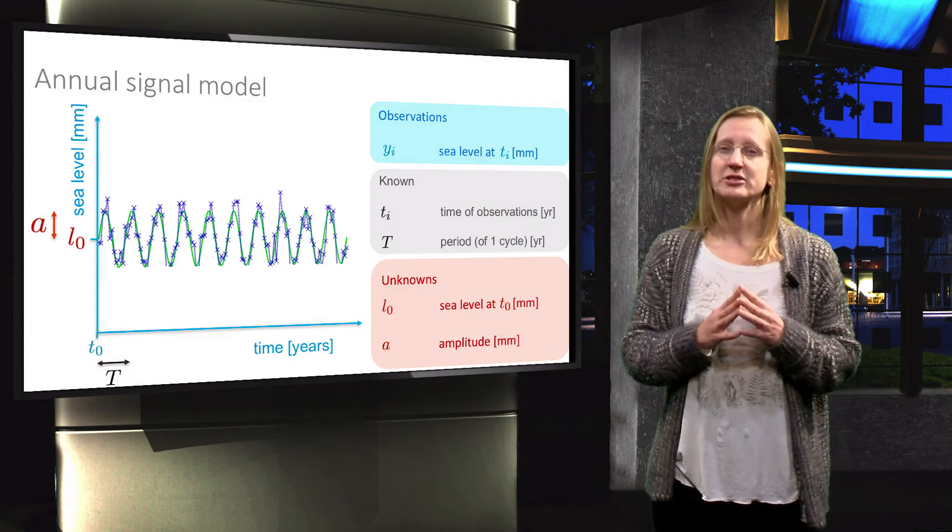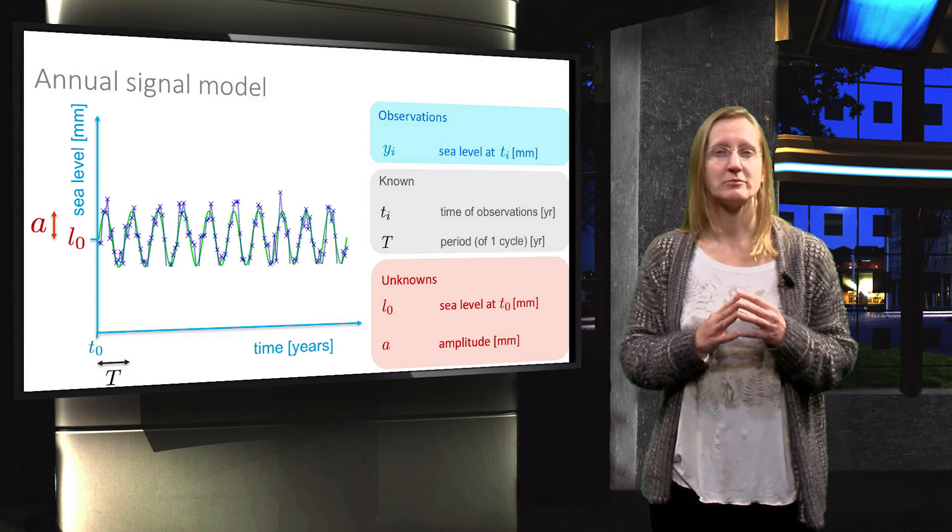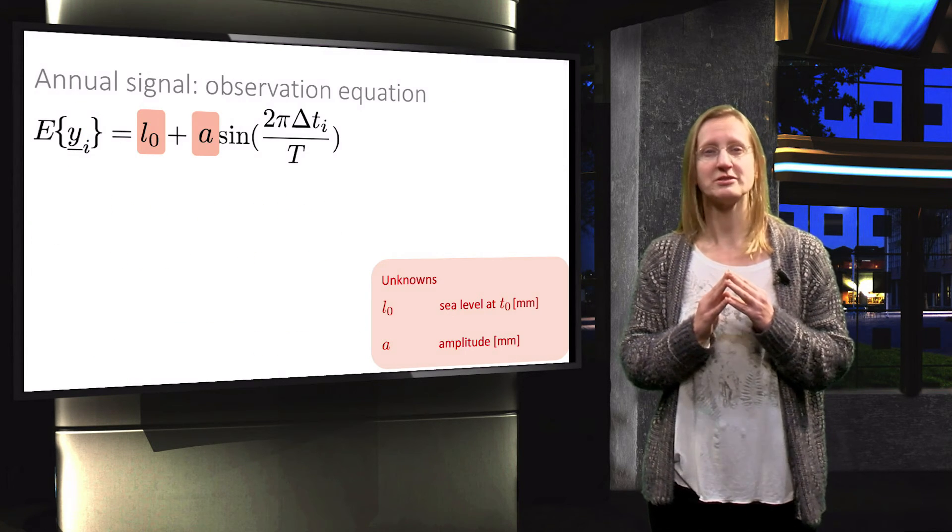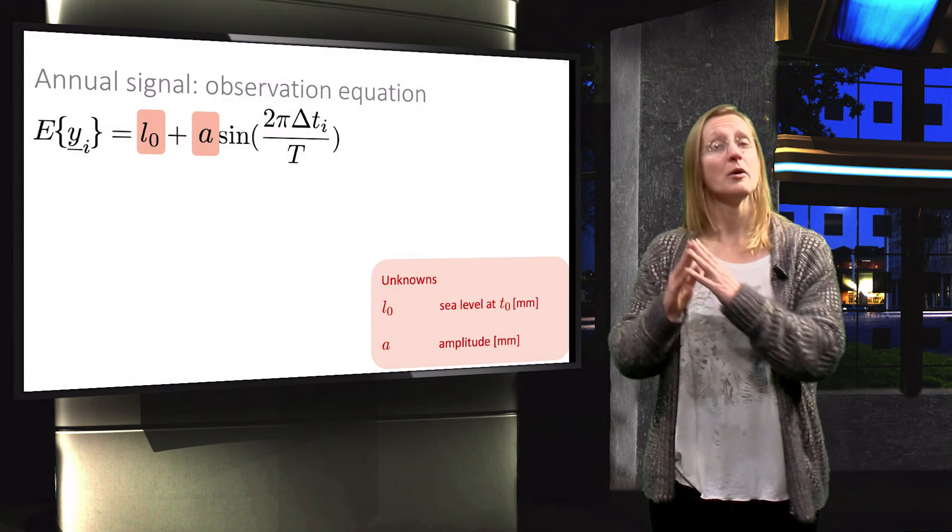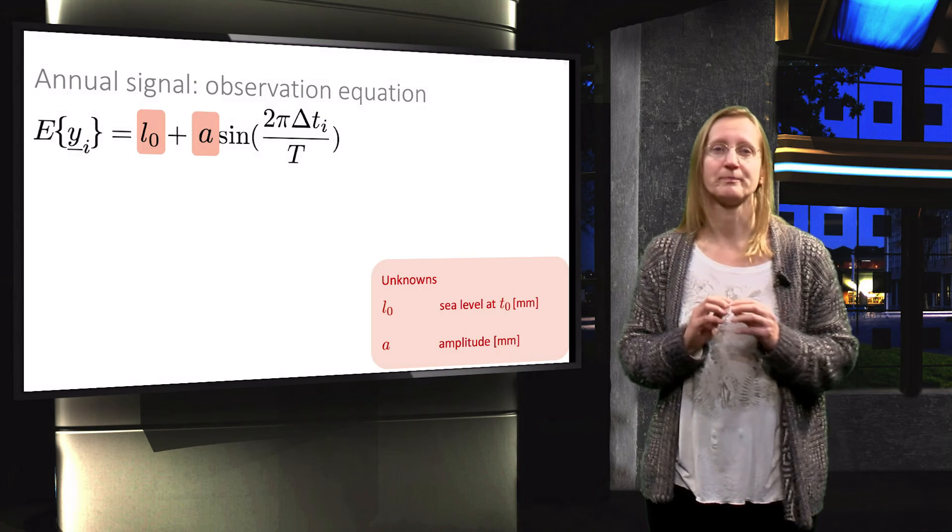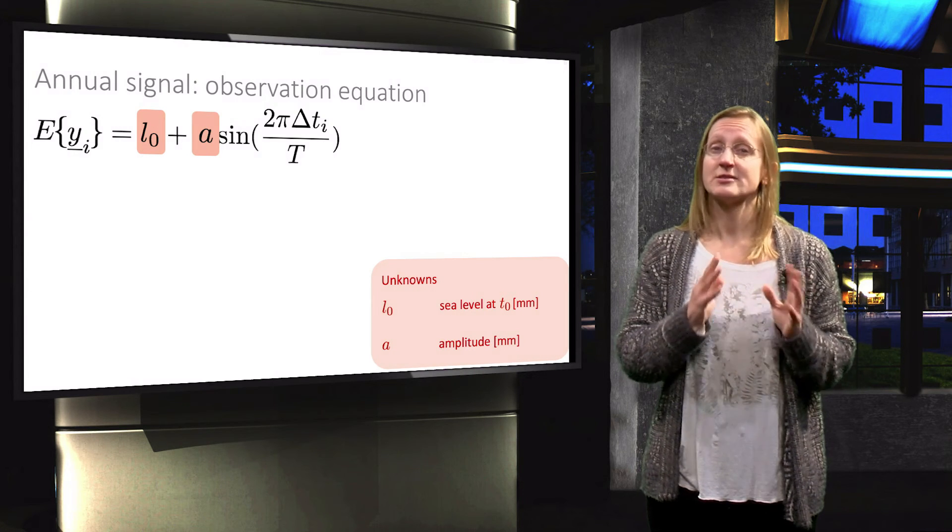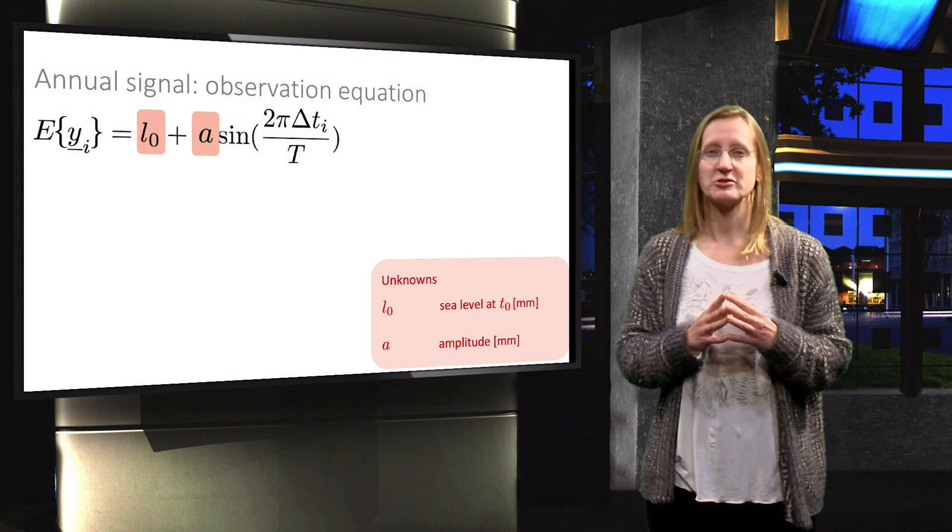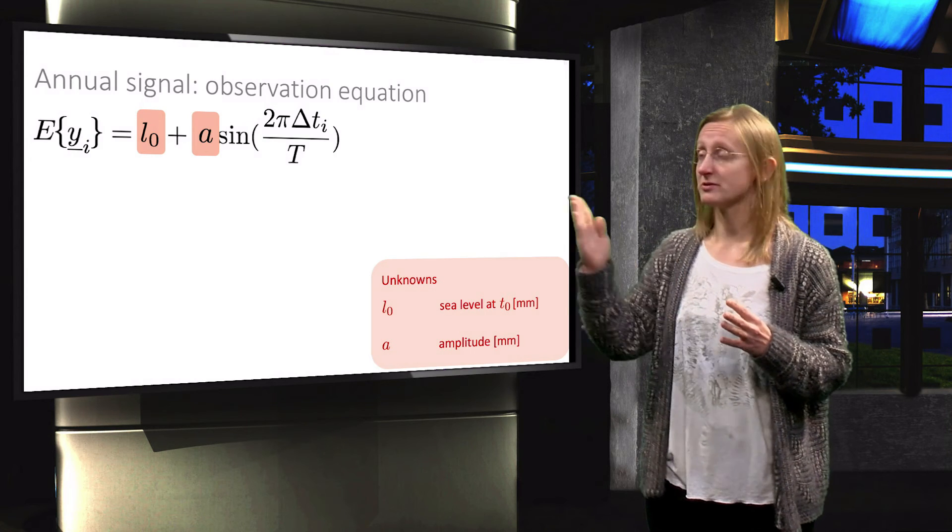The observation equation for this model becomes the sum of the unknown initial sea level, L0, plus the sine term multiplied with the unknown amplitude. Since the period T is equal to 1, the observation equation simplifies to this one.